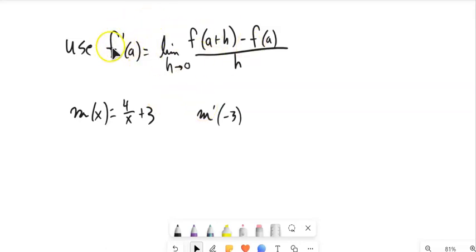We are going to use this definition of the derivative to find the derivative of M at the point negative 3, when X is negative 3.